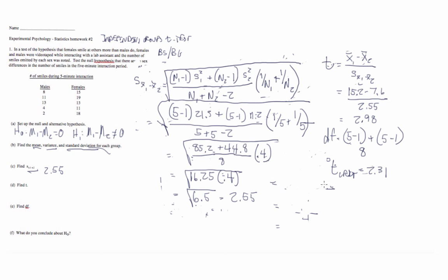And so therefore we reject the null hypothesis, that there is no difference in the number of smiles between males and females during a five-minute interaction. So we can say statistically that women are smiling more than men in this particular sample. And that is how to do an independent groups T-test from start to finish.